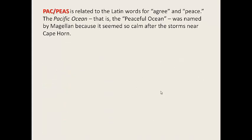Our second root word is 'pac' or 'peace,' and it's related to the Latin word for agree and peace. An example: the Pacific Ocean — that is the peaceful ocean — was named by Magellan because it seemed so calm after the storm near Cape Horn.